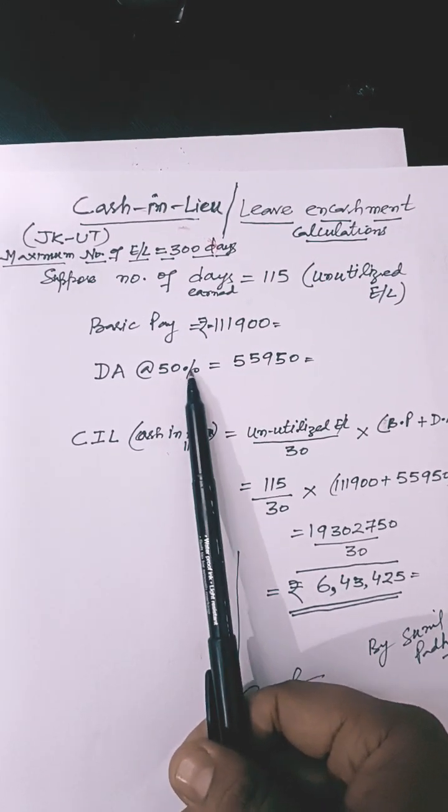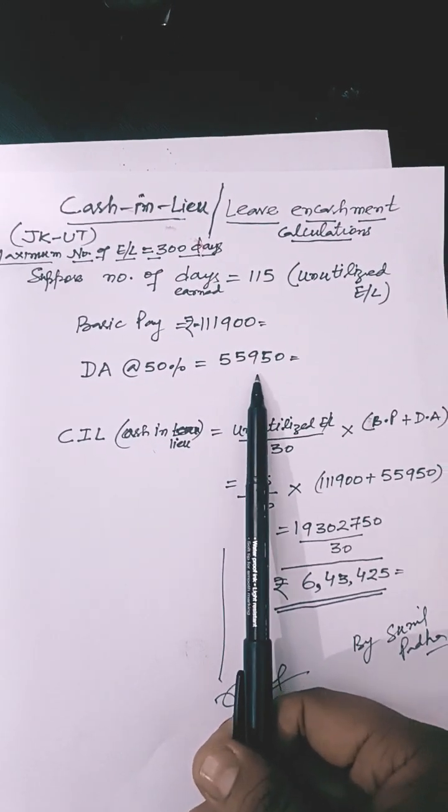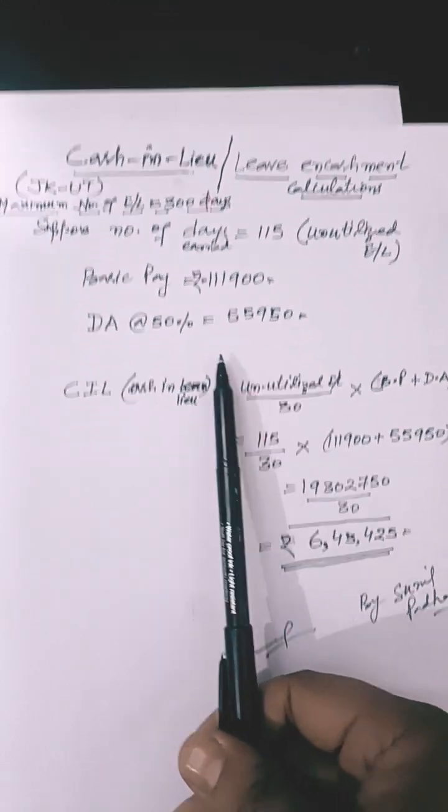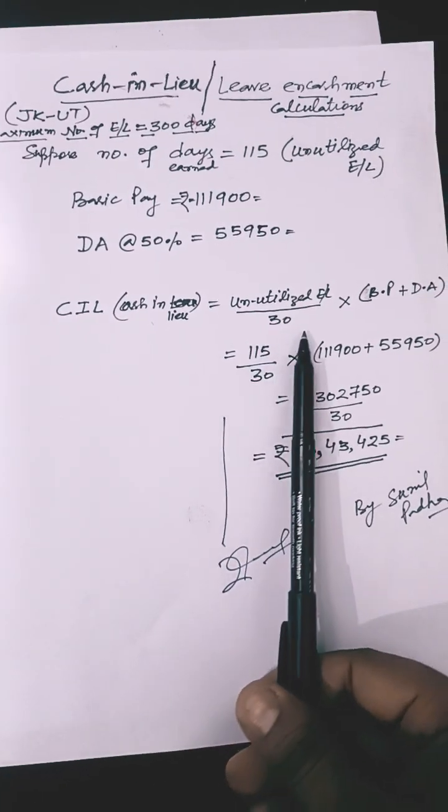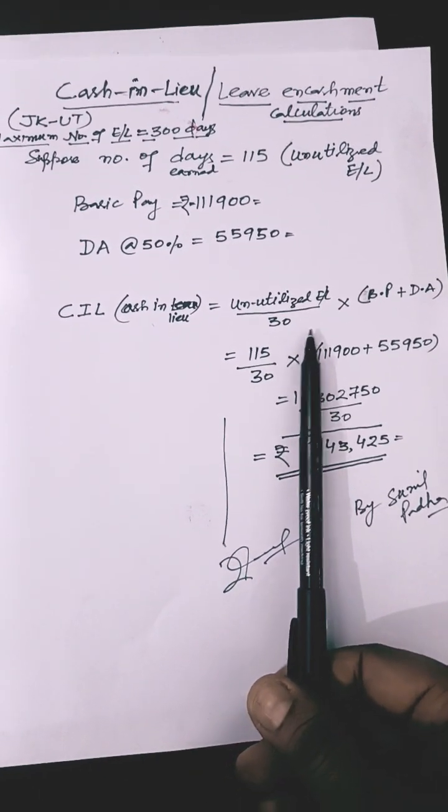amount of DA is equal to ₹55,950. Then the formula for cash in lieu is equal to unutilized earned leave